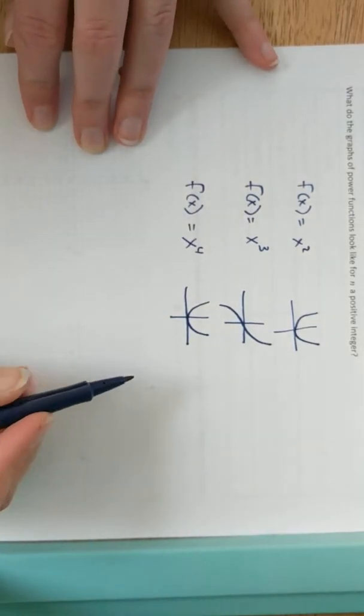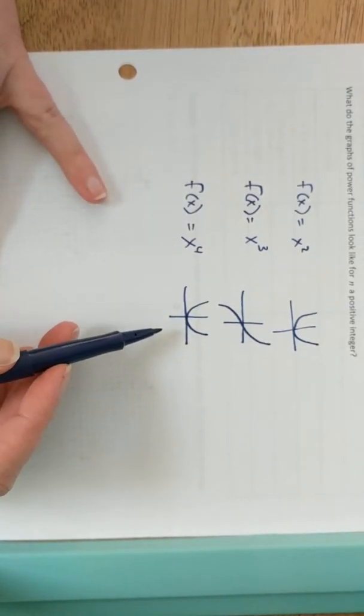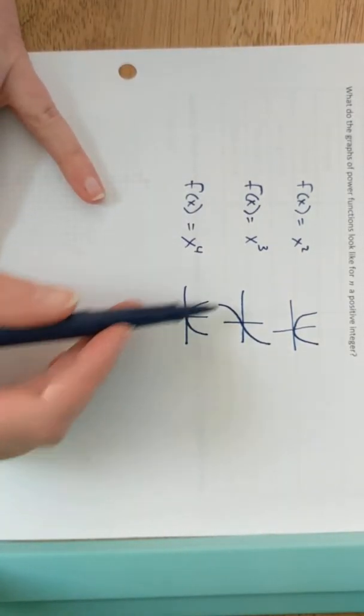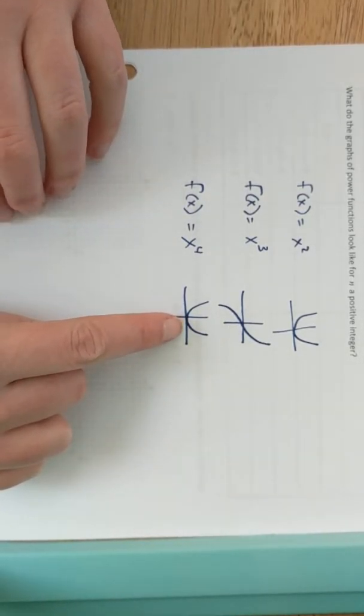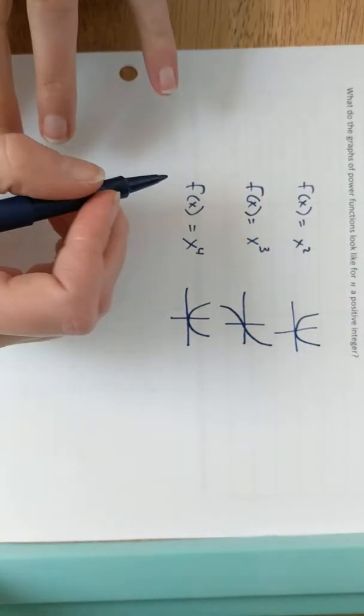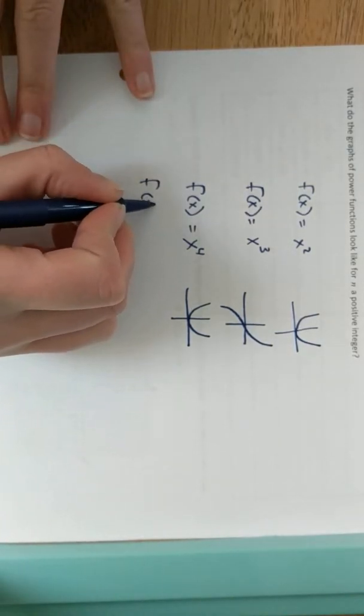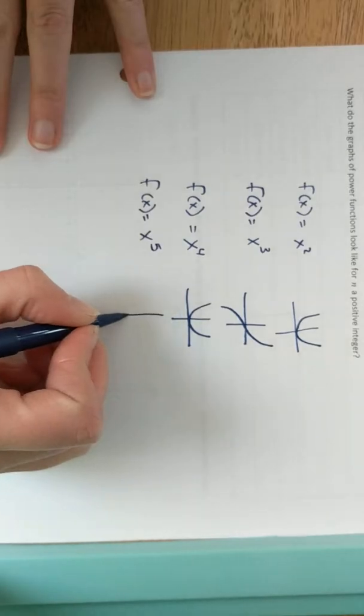And f of x equals x to the fourth. I encourage you to try this in a calculator to see what they look like. In particular, in a calculator, you might note a difference between the two functions that I graphed here for x squared and x to the fourth. They are very similar, but you may notice that the x to the fourth graph is a little bit wider near the origin, but the shapes are going to be in general the same.